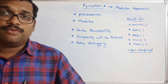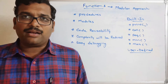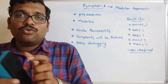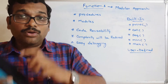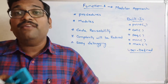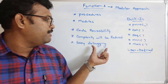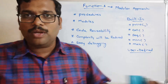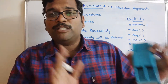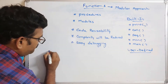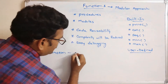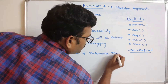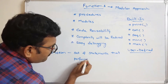Another benefit is easy debugging. If you have any error in complex code, it's difficult to find where exactly the error occurs. But when you go with this modular approach, you can go directly to the particular module where the error occurred. Identifying errors and rectifying them is called debugging, and that process becomes much easier when using functions. A function is a piece of code — a set of statements that performs a specific task.